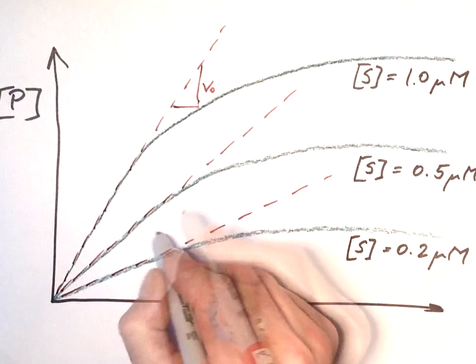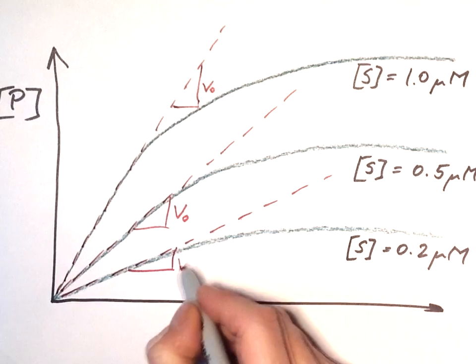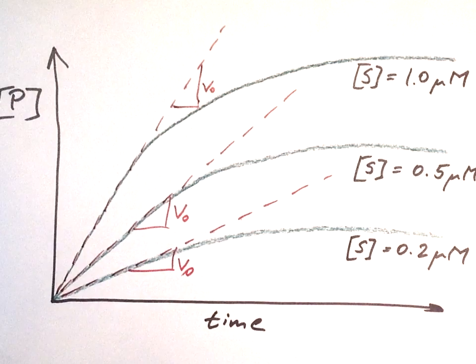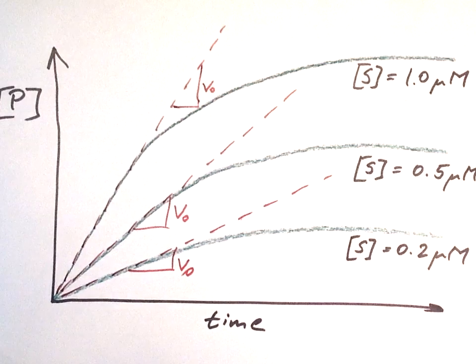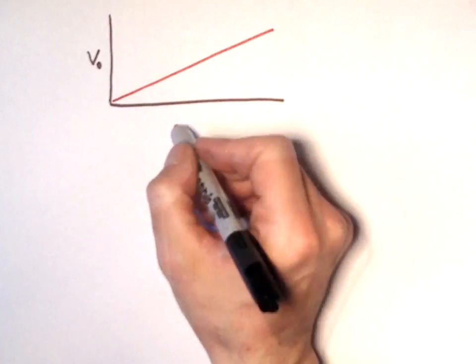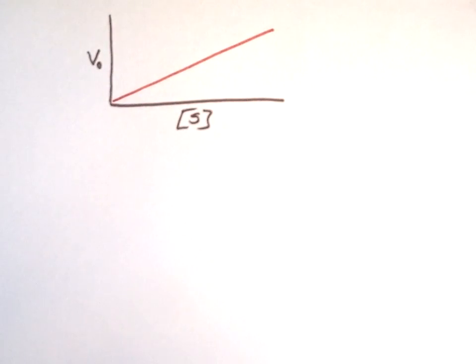V0 is proportional to S. The bigger the concentration of substrate, the faster the initial rate, V0. If we plot this correlation, V0 against the concentration of S, we get a linear correlation for simple reversible reactions S to P with forward rate constant k1 and reverse rate constant k-1. The slope of the graph on the left is equal to k1.